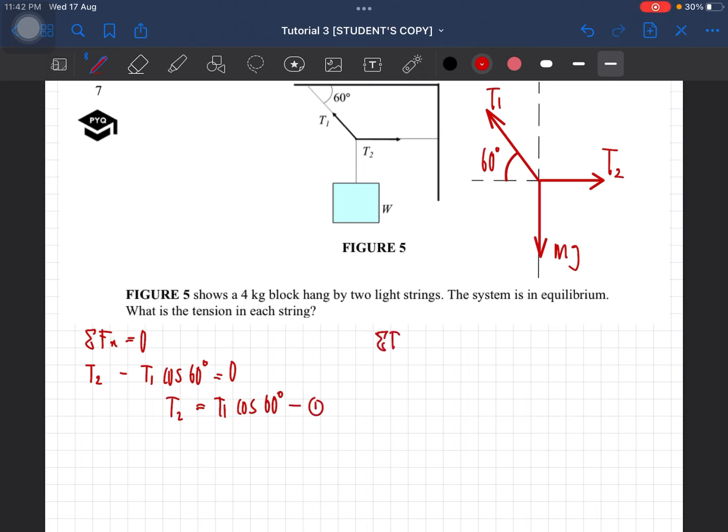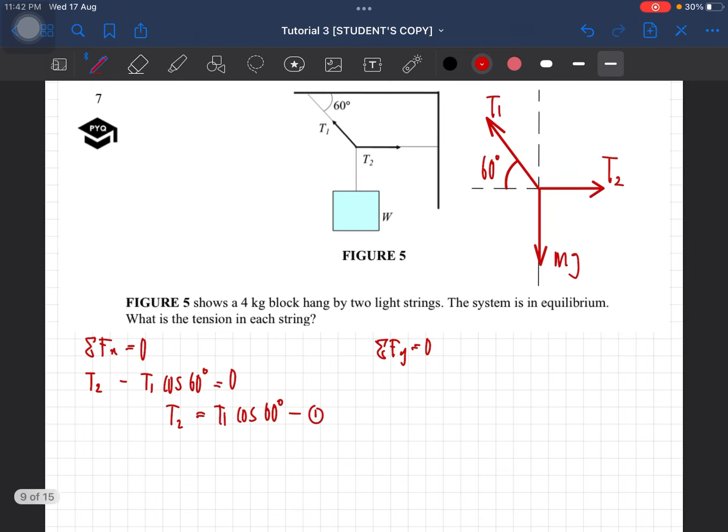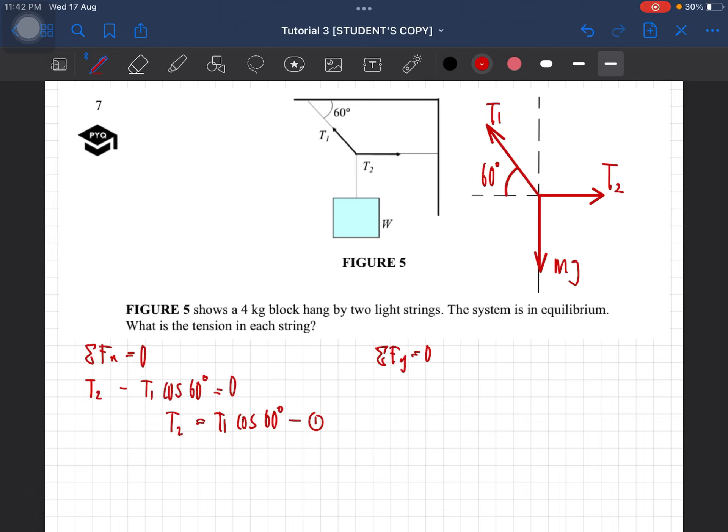Now let's look at the y component as well. So for the y component, anything that's pointing up will be positive and anything that's pointing down will be negative. So this one will be positive T1 times with sine 60 degree minus with mg. Do we have anything else? No, we only have that.